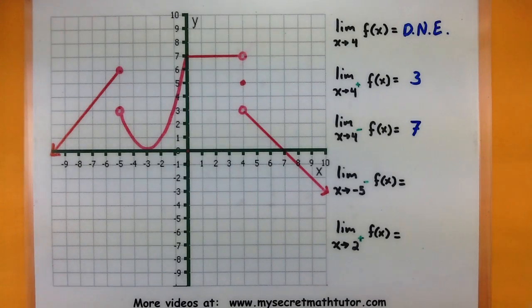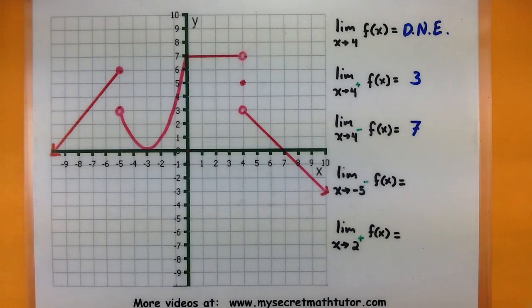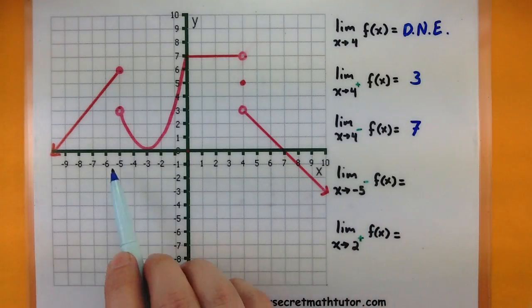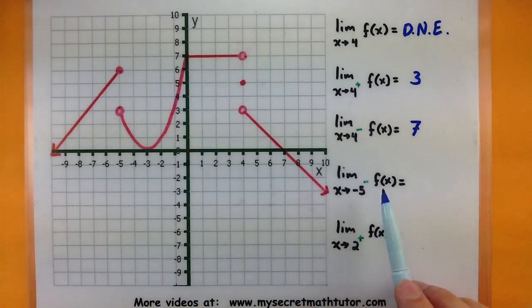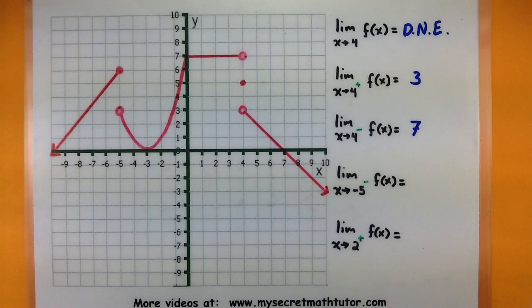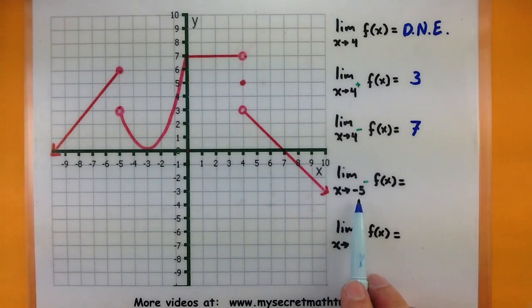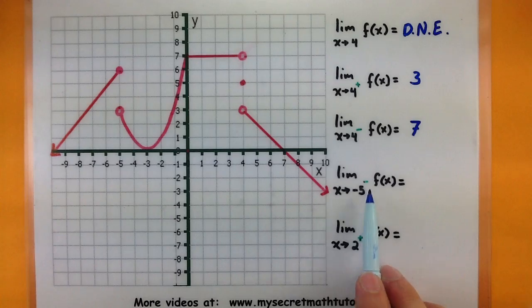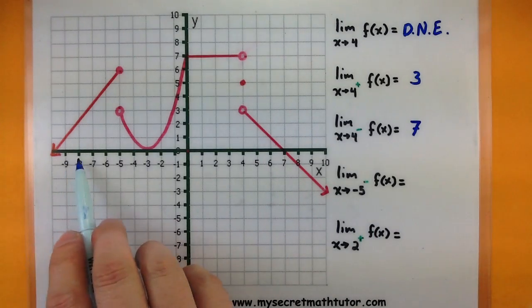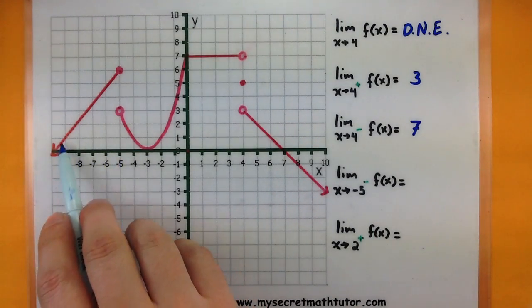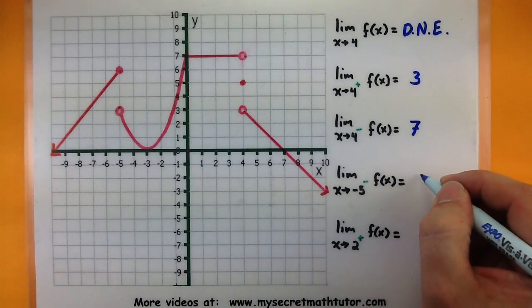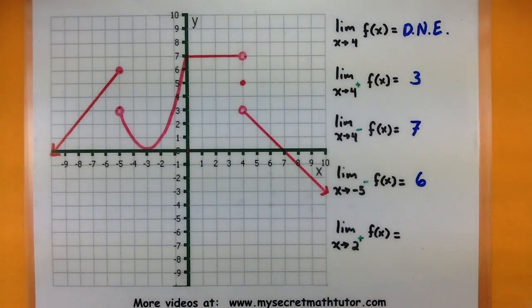The only problem that people usually have with this is when you're approaching negative values — a lot of negative signs get thrown in there and it gets really confusing. Notice how in this next example, the negative 5 is the value we are approaching, but it's the little negative sign that looks like a power that tells us which side we are approaching. So this one says approach negative 5 from the left side. What is this function doing as we approach from the left? Looks like the function wants to be 6 — so that would be the left-sided limit.